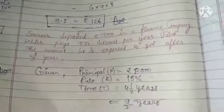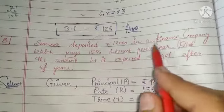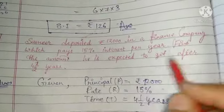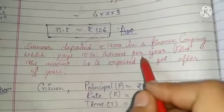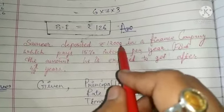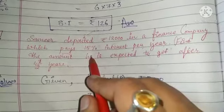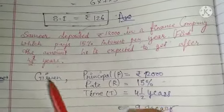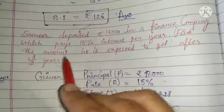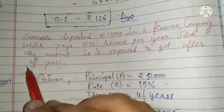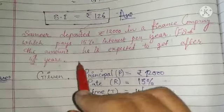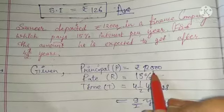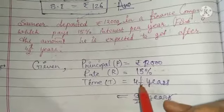Next question: Samir deposited Rs. 12,000 in a finance company which pays 15% interest per year. Find the amount he is expected to get after 4 and a half years. Samir deposited Rs. 12,000 at 15% and wants to know the amount after 4½ years. Given: Principal = Rs. 12,000, Rate = 15%, Time = 4½ years = 9/2 years. We need to find the amount.